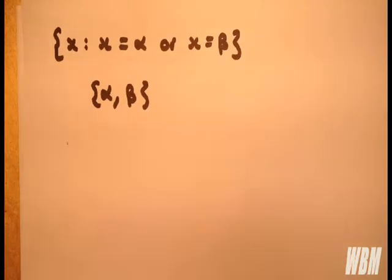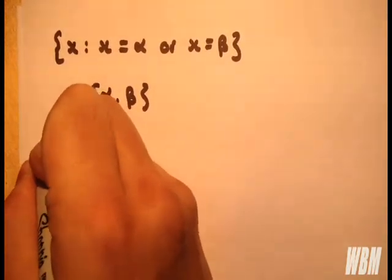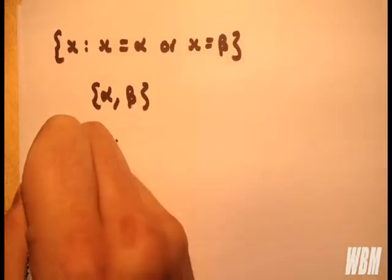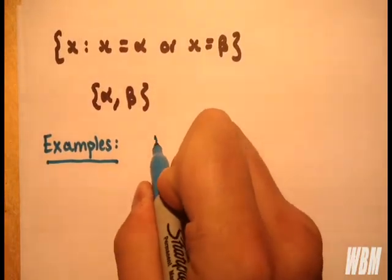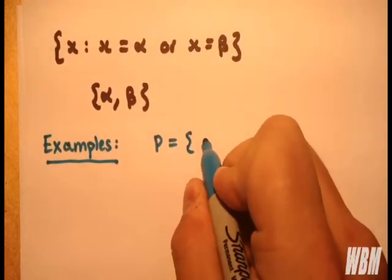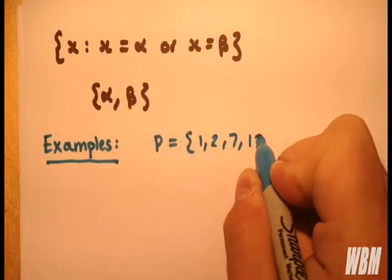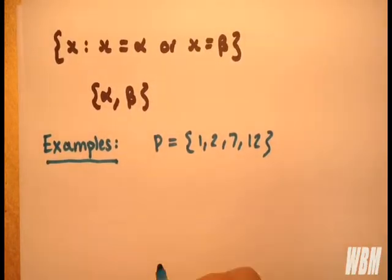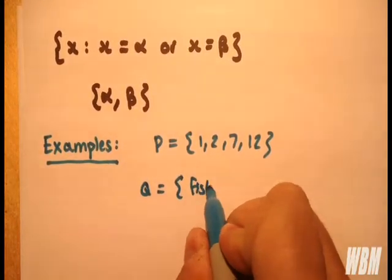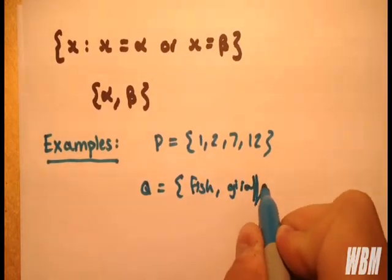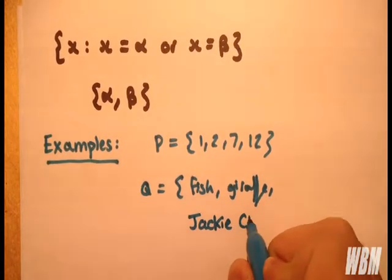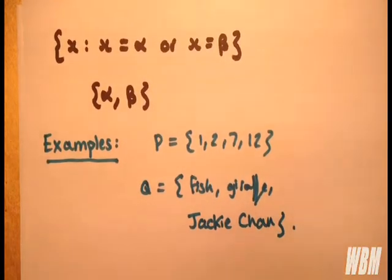Here are some quick examples to give you some idea. So we're going to write down some fun examples here. We're going to have P being {1, 2, 7, 12}. Q is {fish, giraffe, Jackie Chan}. You get the idea.